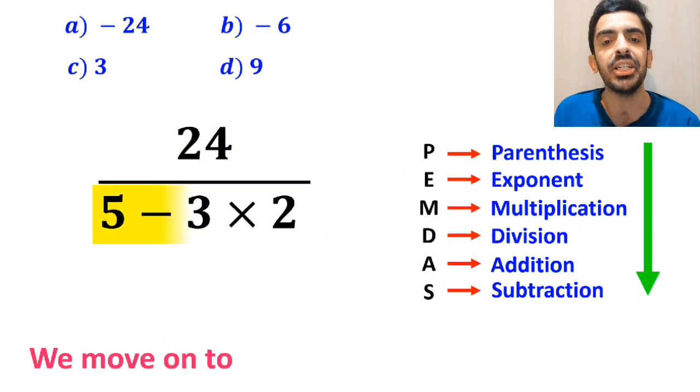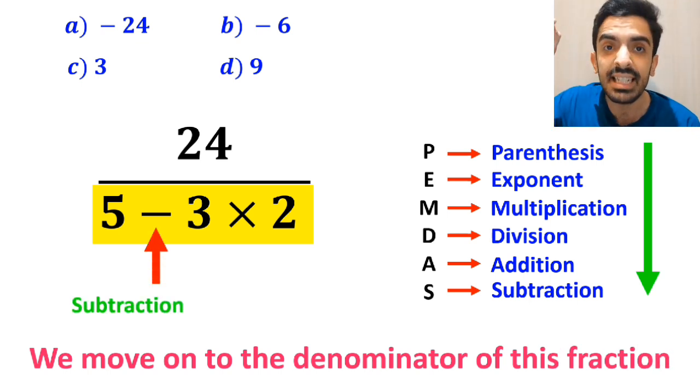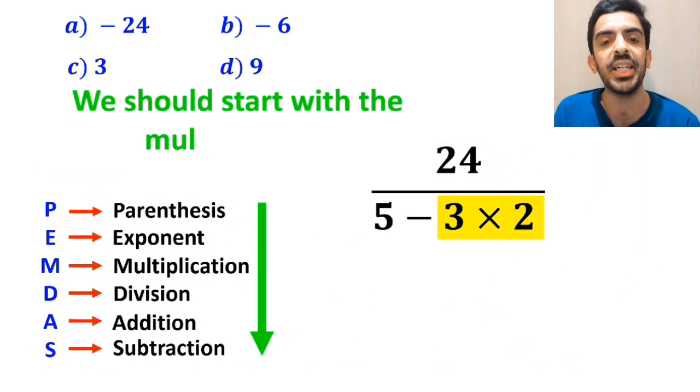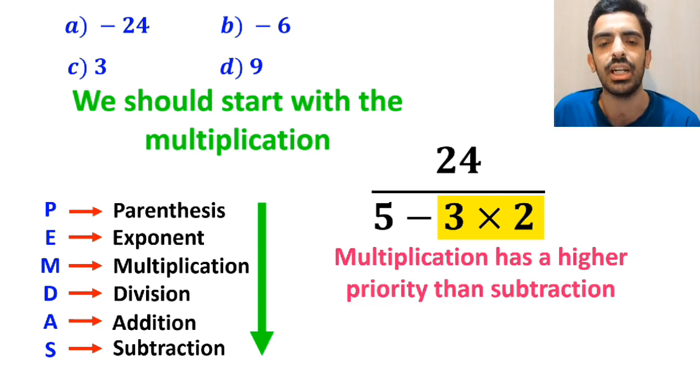Then, we move on to the denominator of this fraction. As you can see in the image, in the denominator, first we have a subtraction sign, and then a multiplication sign. We should start with the multiplication between 3 and 2, because multiplication has a higher priority than subtraction.